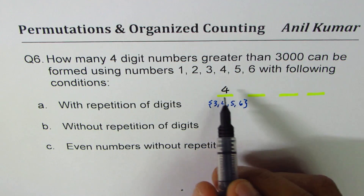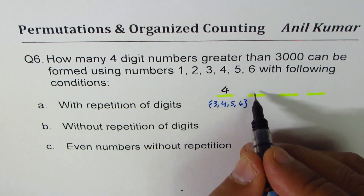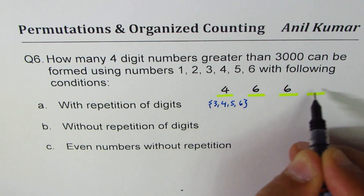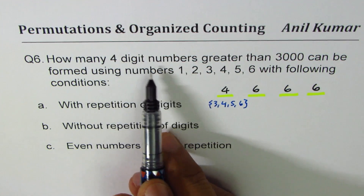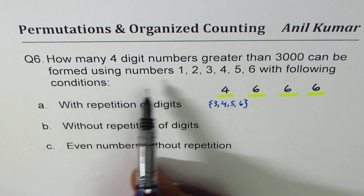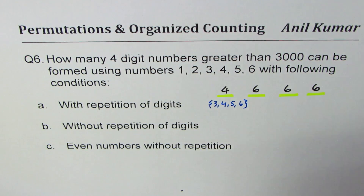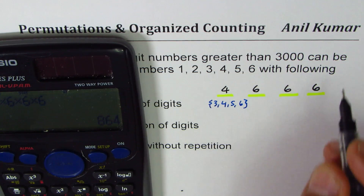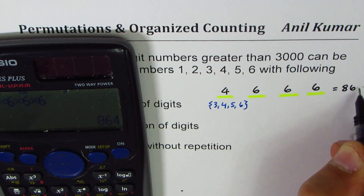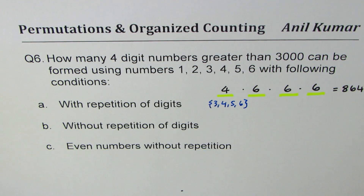With repetition of digits allowed, in the other three places we can place any of the digits one through six, so six choices each. Multiplying using the fundamental property of counting: four times six times six times six equals 864. So 864 four-digit numbers greater than 3000 can be formed with repetition.